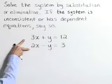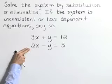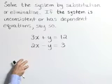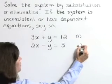Here we have the system 3x plus y equals 12 and 2x minus y equals 3. I'm going to go ahead and start by identifying these as equations numbers 1 and 2.